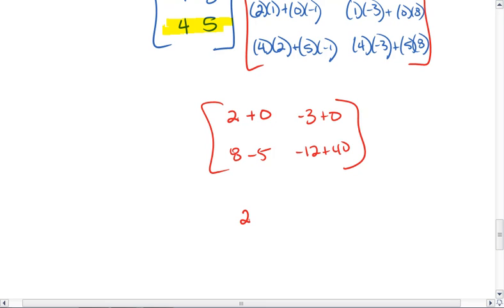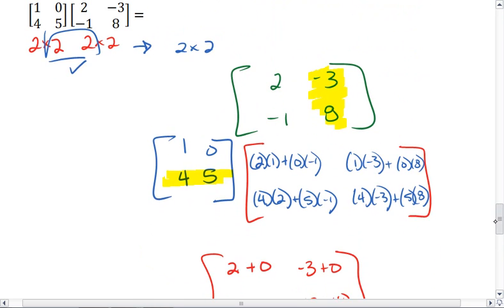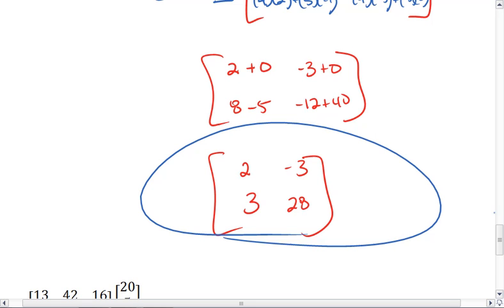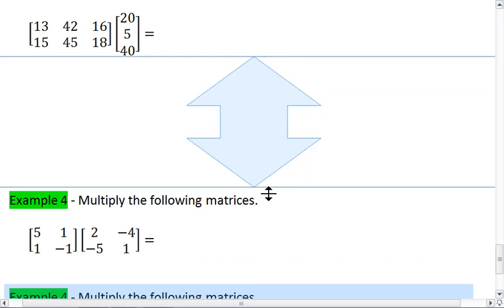We now get 2, negative 3, 3, and then 28. And that is our final answer. So matrix 1, 0, 4, 5 by 2, negative 3, negative 1, 8 multiplied together gives us 2, negative 3, 3, 28. Let's try one more example before I let you try one on your own.